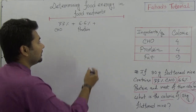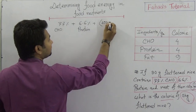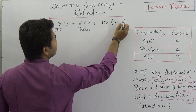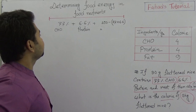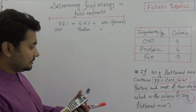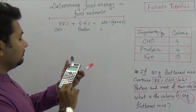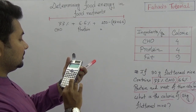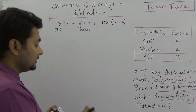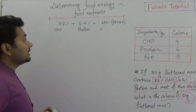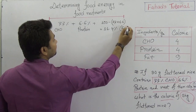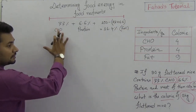We have 77% carbohydrate and 6.6% protein given. So the percentage of fat is: 100 − (77 + 6.6) = 100 − 83.6 = 16.4%. So 16.4% is the fat percentage. Now we have all three percentages from the given data.